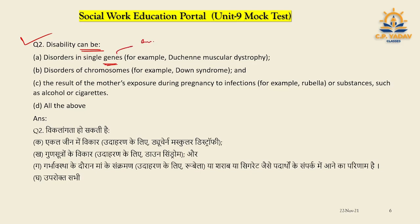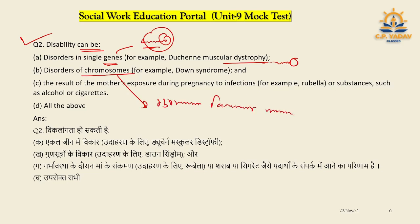It can be a disorder of chromosomes. In some way it can be genetic — for example, Down syndrome. This can also be a result of mother's exposure during pregnancy.